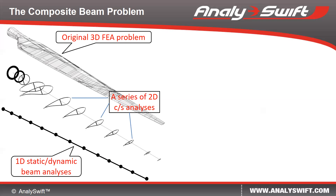After we obtain the loads in terms of forces and moments from the one-dimensional beam analysis, we can use VIPS to predict the distribution of 3D stresses, strains, and failure over the cross-section. This approach is usually used in the preliminary design stage, because the full 3D FEA in terms of solid elements or shell elements is too expensive, if not impossible, for design studies.